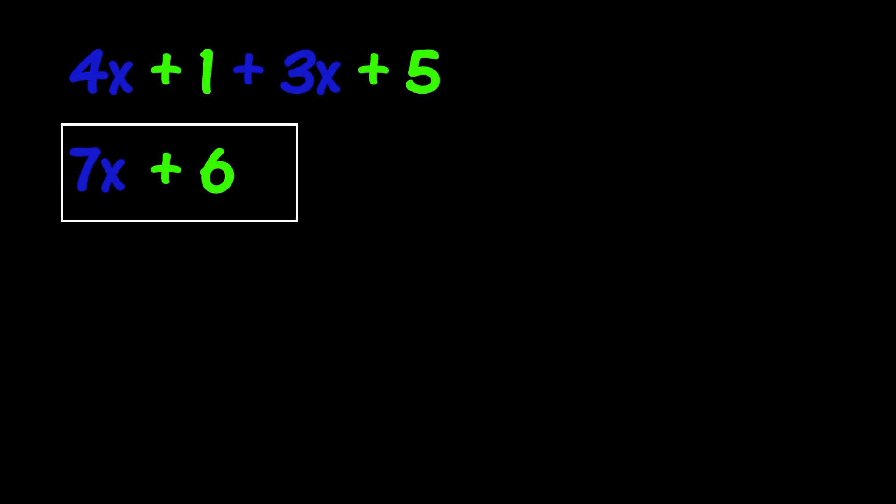Now, let's see what happens when subtraction is put in the mix. Here we have the same expression, except a couple of plus signs have been replaced with minus signs. Think of the minus signs as being attached to the term that follows. So, instead of thinking of the third term as 3x, think of it as minus or negative 3x.